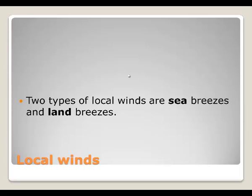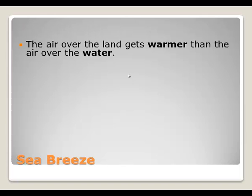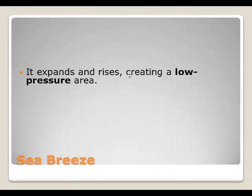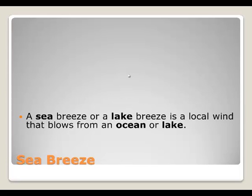We call these either sea breezes or land breezes. A sea breeze: during the day, the land warms up faster than the water. The air over the land becomes warmer and therefore less dense, so the less dense air starts to rise. This creates a low pressure area at the surface. Cooler air from over the water then moves in to the area that the warm air vacated. A sea breeze or lake breeze is a local wind that blows from an ocean or lake onto the land.